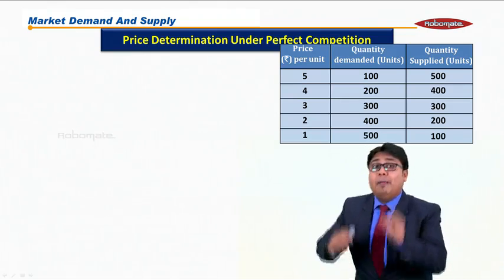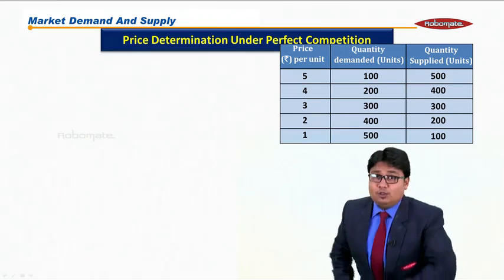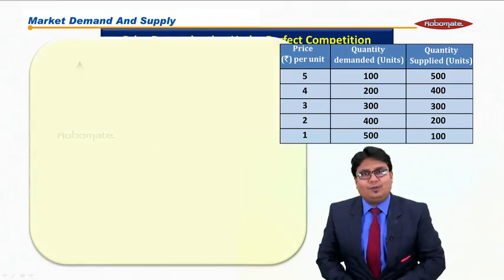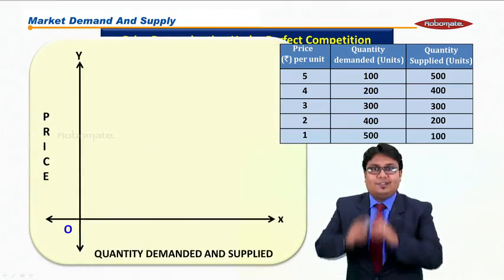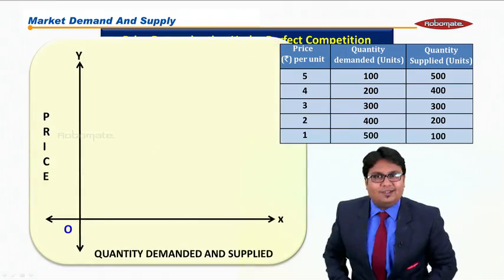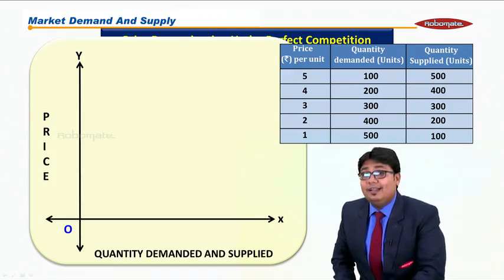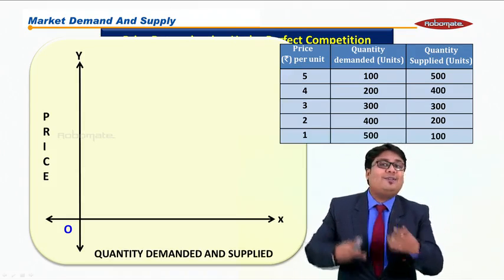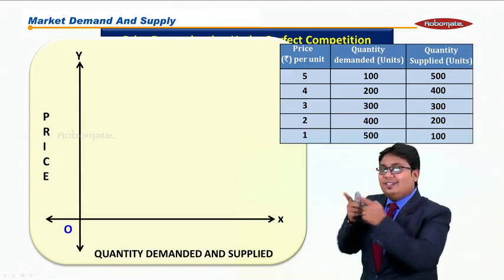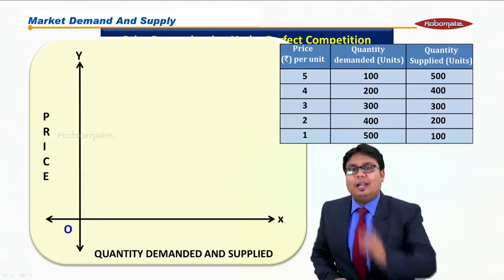So to draw the diagram there will be two axes: y-axis and x-axis. On the y-axis I'll consider price, and on the x-axis there will be two factors: quantity demanded and quantity supplied.